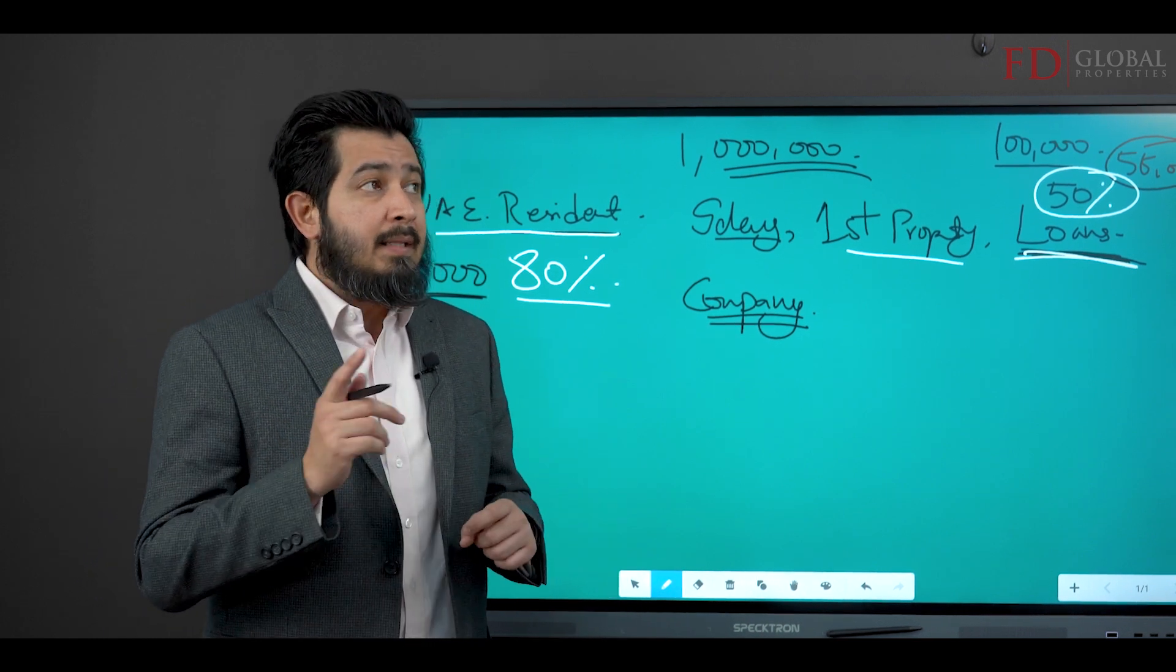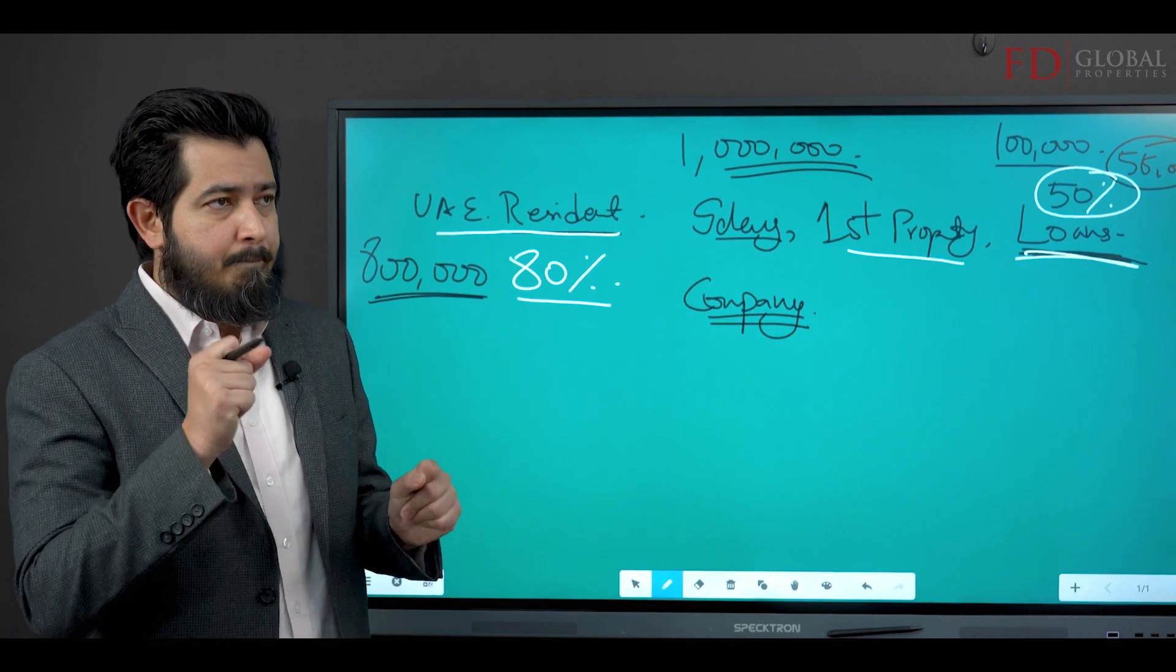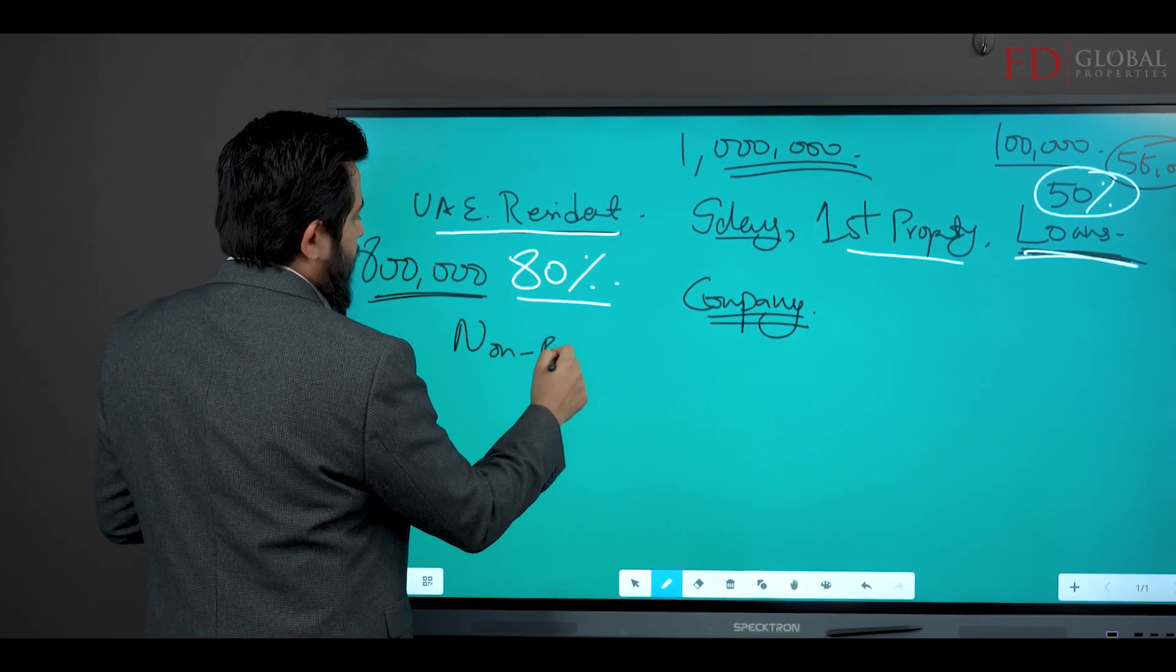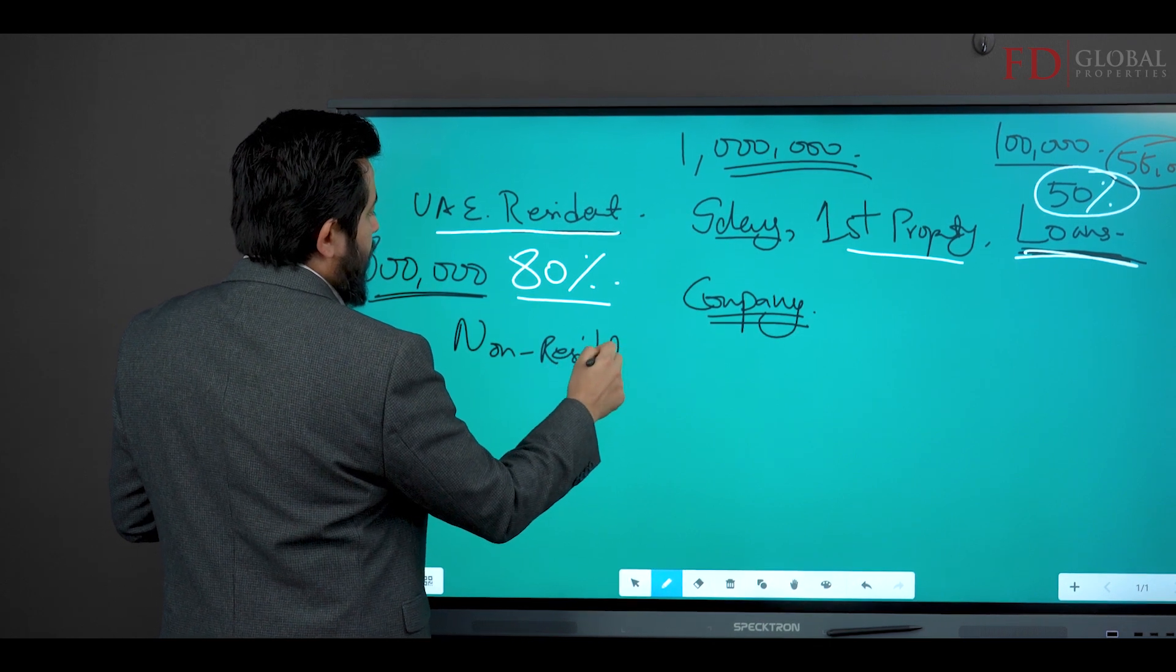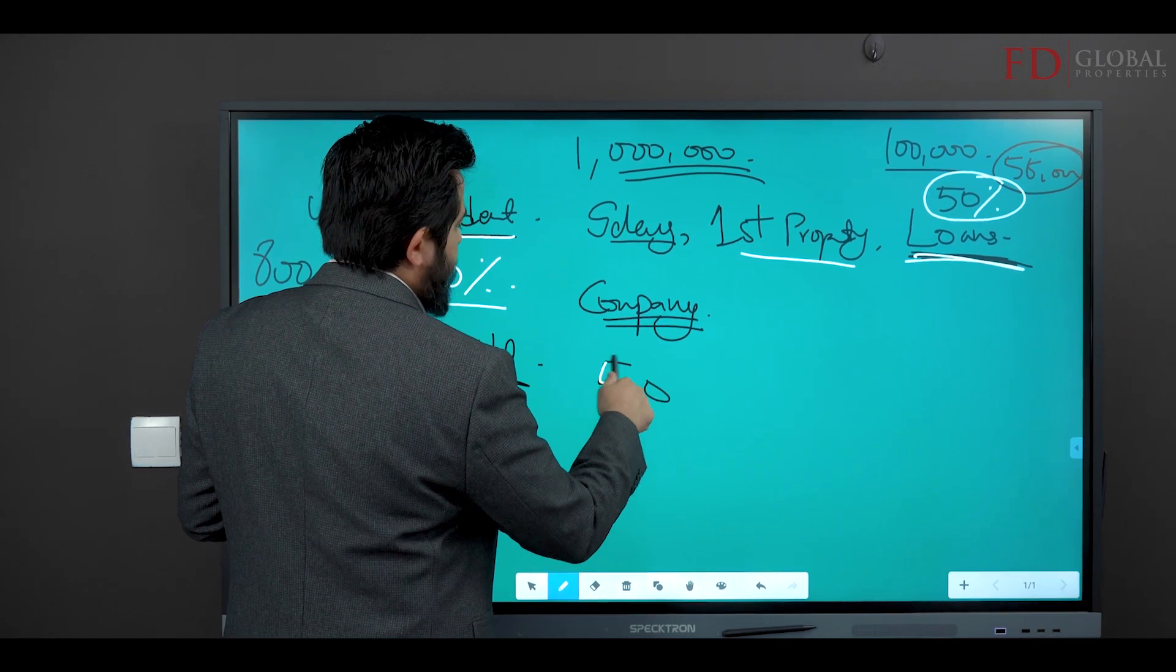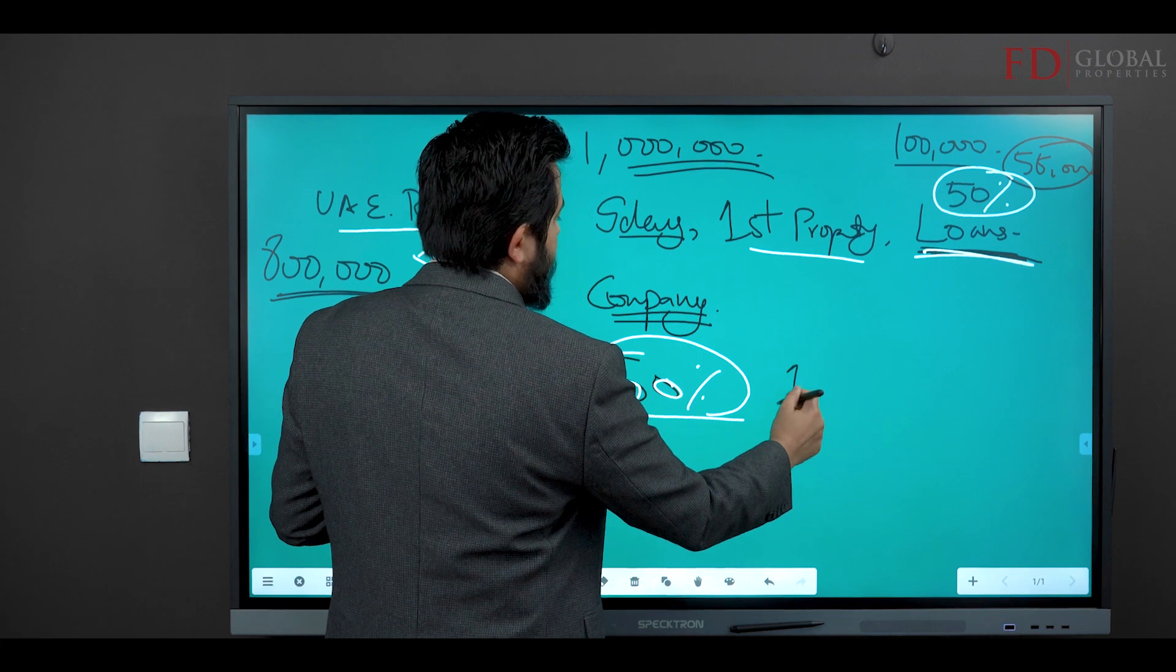There is another angle to this. If you are a non-resident, generally speaking you can get up to 50 percent on your first property.